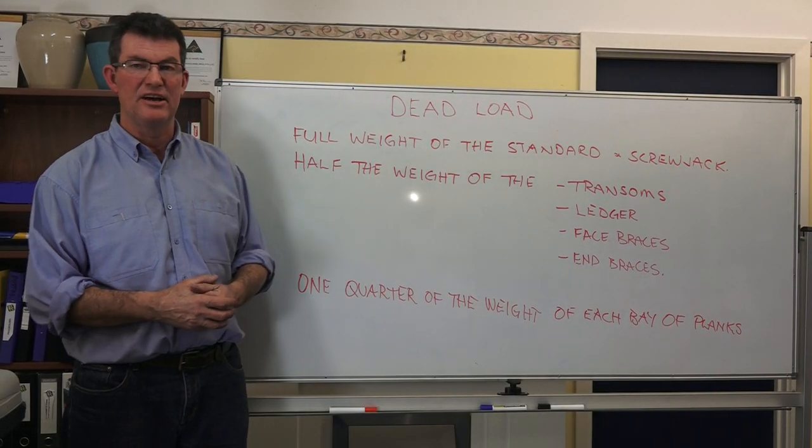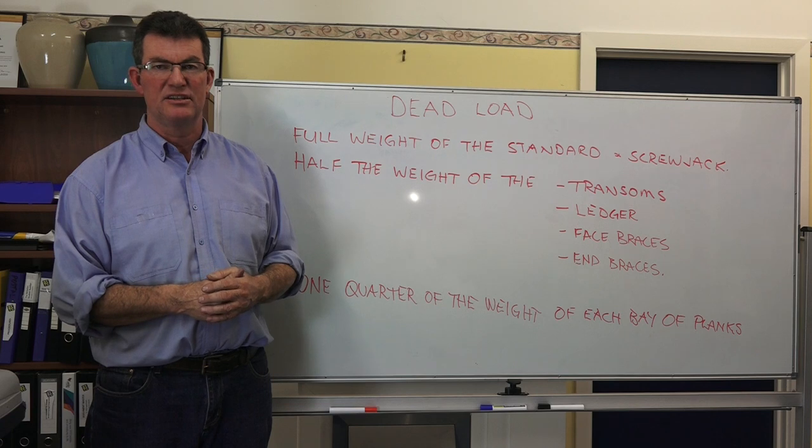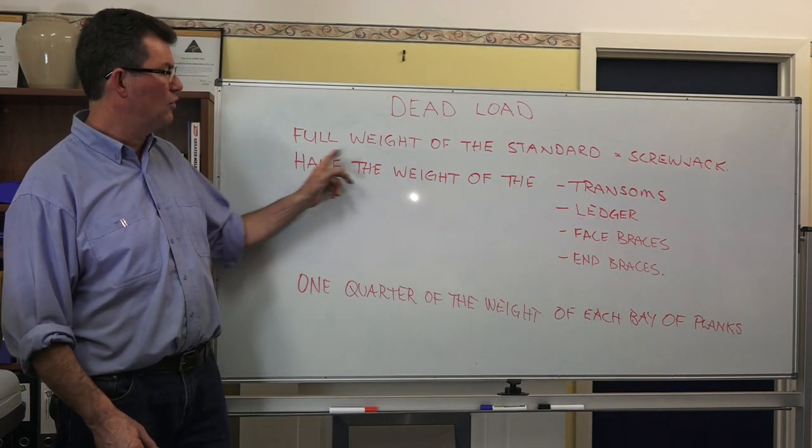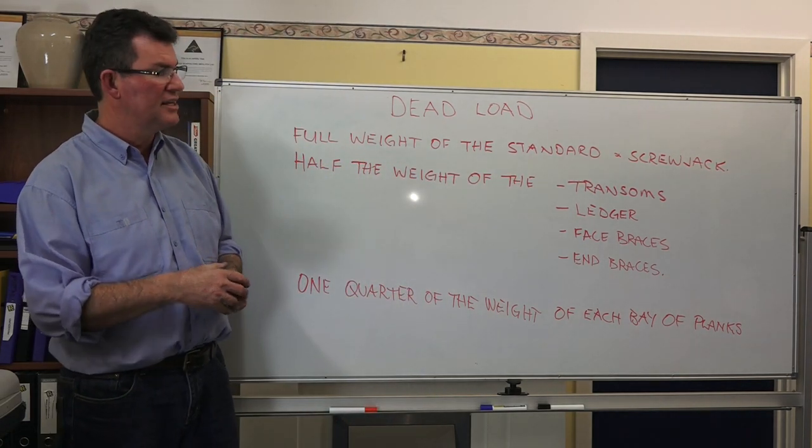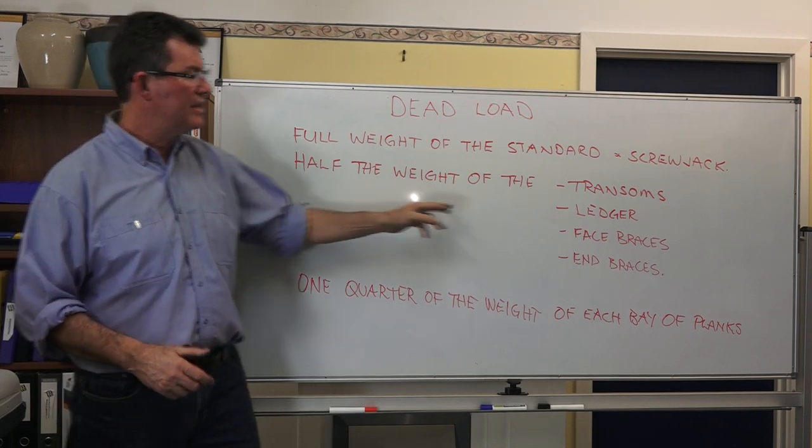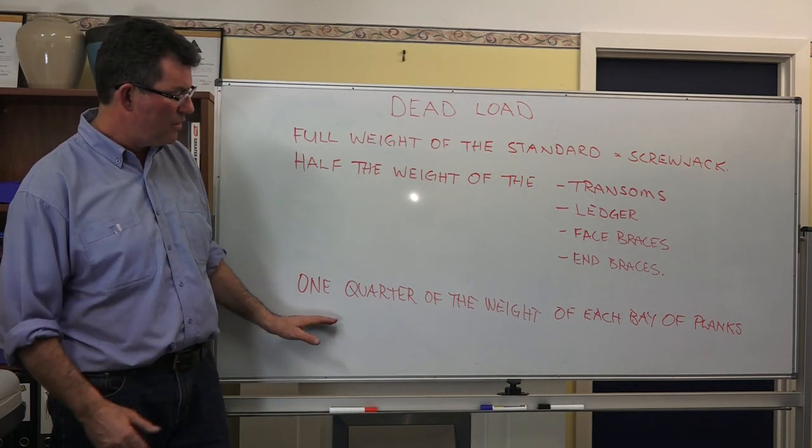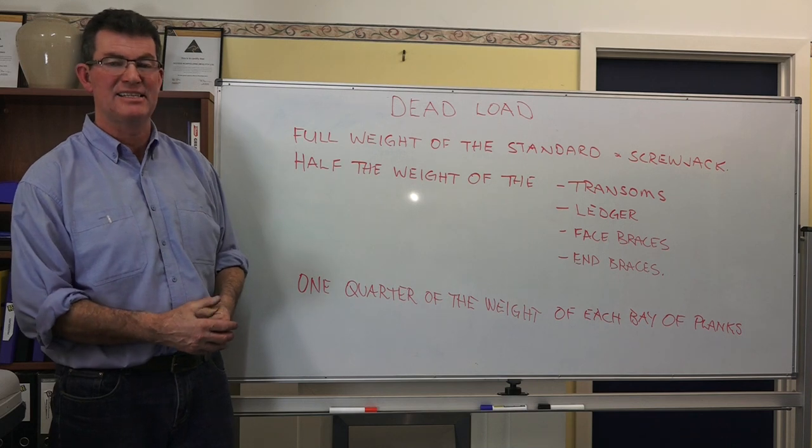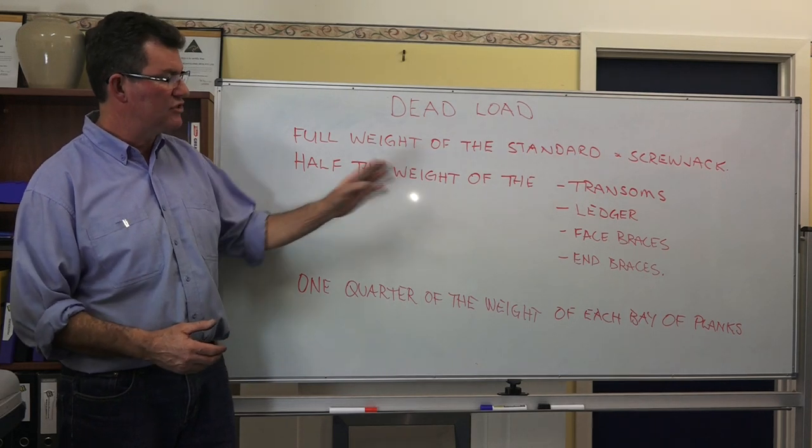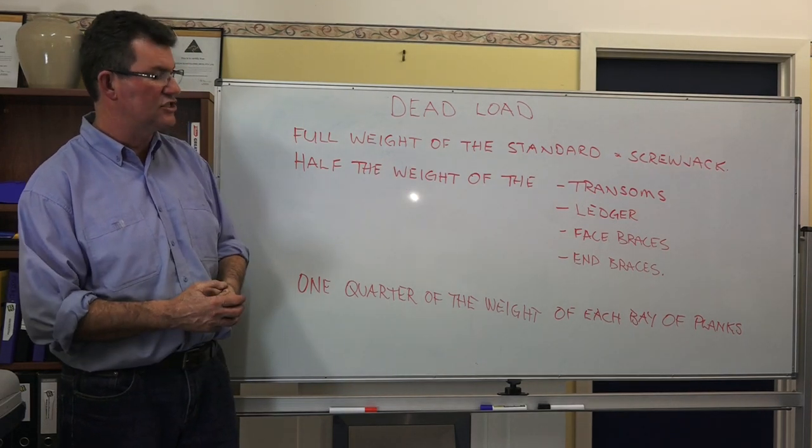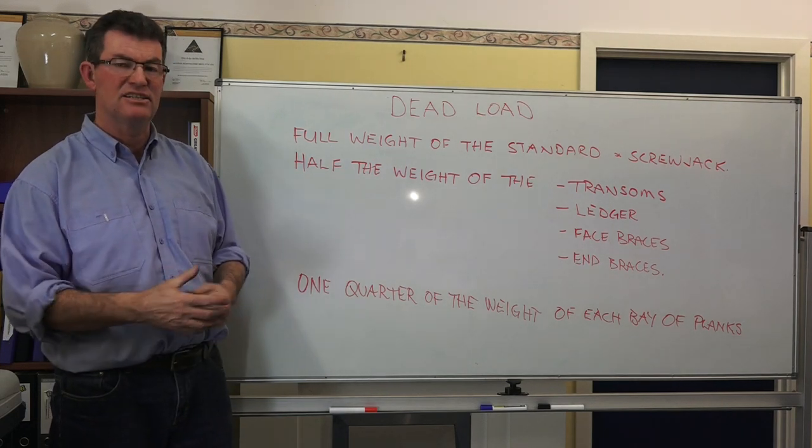So calculating the dead load. The dead load is the weight of the components attached to a particular standard being transferred down to the ground. To calculate that, we take the full weight of the standard and screw jack - the 3 meter standard weighs 18 kilos and the screw jack weighs 7 kilos. Then half the weight of the transoms, ledges, face braces and end braces attached to that standard, and one quarter of the weight of each bay of planks attached to that standard.